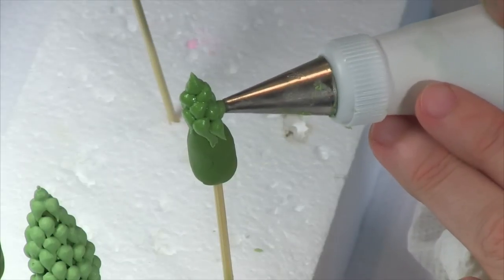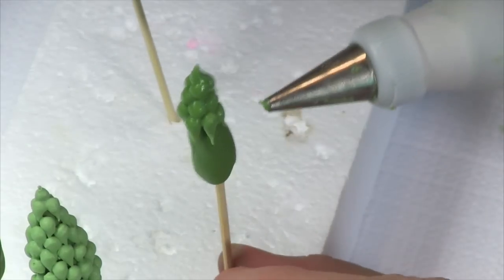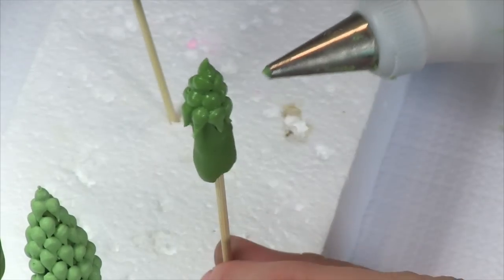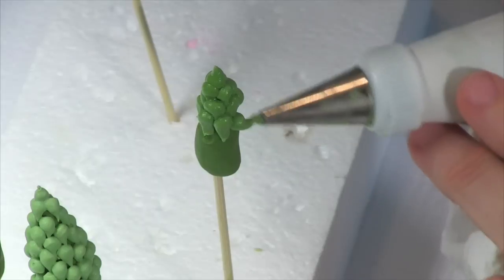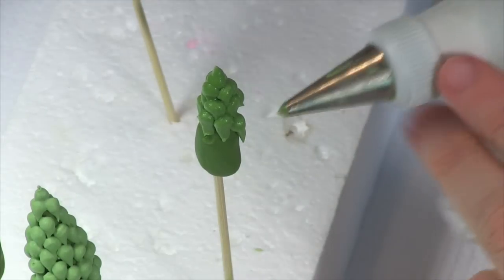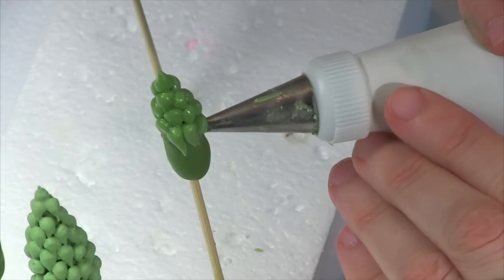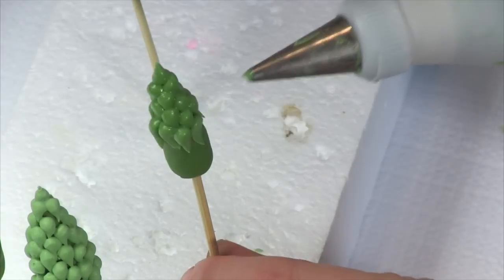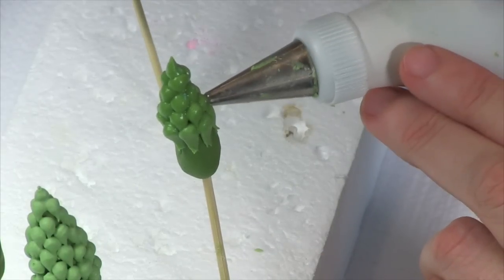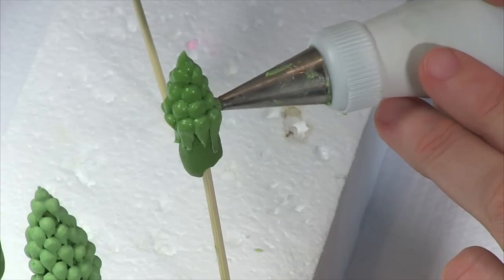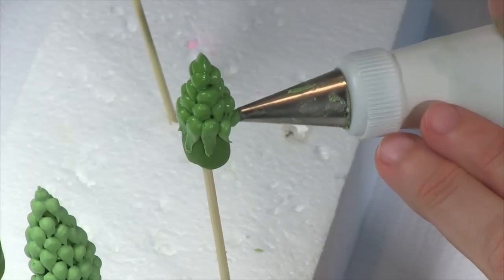I'm cleaning my tip each time with either my finger or a clean towel. I try to stagger the beads, meaning pipe one in between the ones in the row above. And this is why it's convenient to have it on the toothpick or the skewer. I'm just rotating as I go. And we'll continue in this vein all the way down.